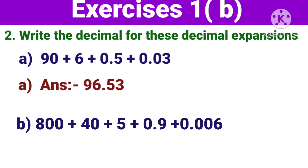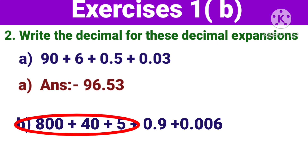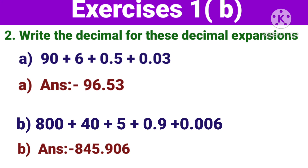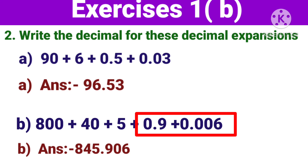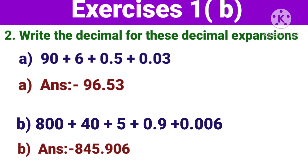Now next one — eight hundred plus forty plus five plus zero point nine plus zero point zero zero six. Toh yahaan dekhiye: eight hundred plus forty plus five — ye whole part mein aayega, toh yisko hum likhenge eight hundred and forty five. Yahaan point start hoga. Toh yahaan dekhiye: nine jo hai woh tenth place pe hai. Yhe zero tenth place pe hai, aur yhe zero hundredth place pe hai. Aur six jo hai, woh thousandth place pe hai. Toh yahaan par hundredth place miss hai. So yisko hum likhenge: eight hundred forty five point nine zero six — 845.906.